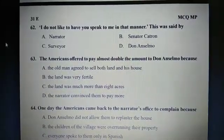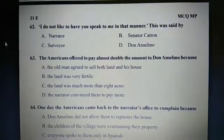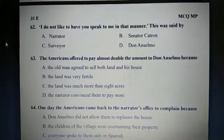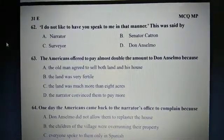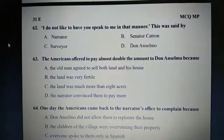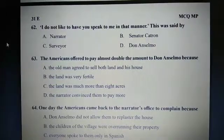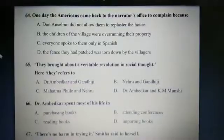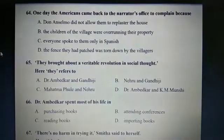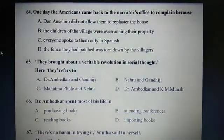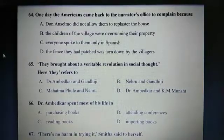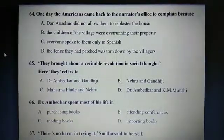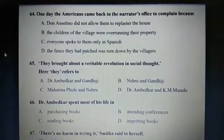Question 63: The Americans offered to pay almost double the amount to Don Anselmo because C: The land was much more than 8 acres. Question 64: One day, the Americans came back to the narrator's office to complain because B: The children of the village were overrunning their property. Question 65: They brought about a veritable revolution in social thought. Here, 'they' refers to A: Dr. Ambedkar and Gandhiji.